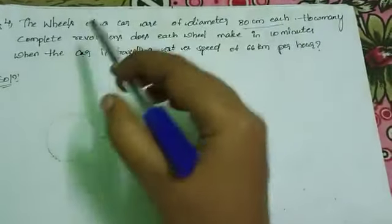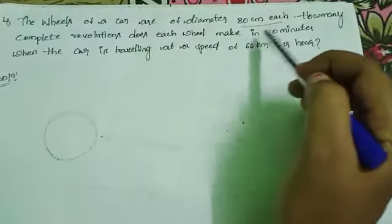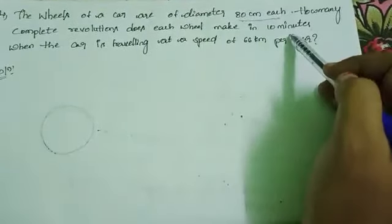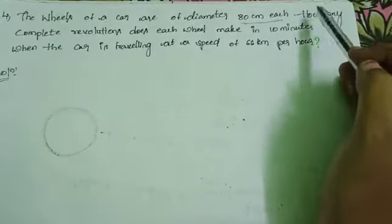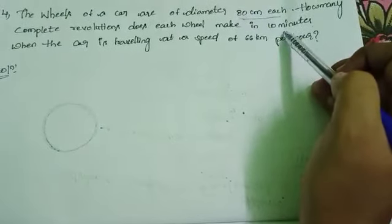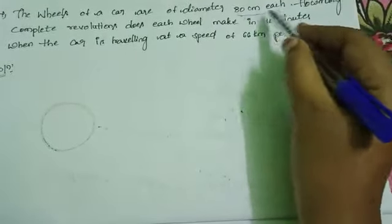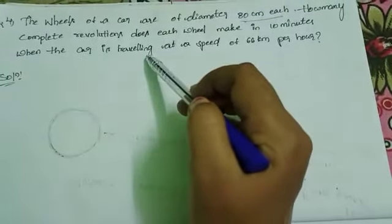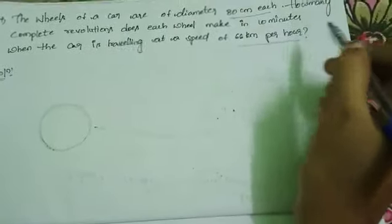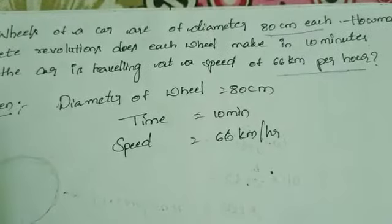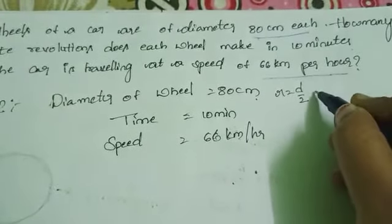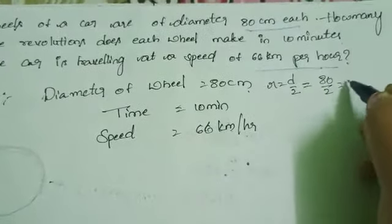Let's discuss the 4th question in areas related to circles. The wheels of a car are of diameter 80 cm each. We have to find how many complete revolutions does each wheel make in 10 minutes, when the car is travelling at a speed of 66 km per hour. So here, given diameter and time, we need to find the number of revolutions of the wheel in 10 minutes.